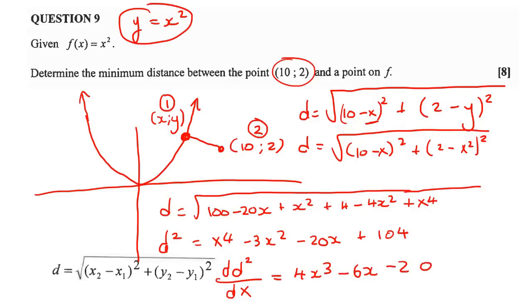All right. And now we know that if you want to find the minimum, you have to make that equal to zero. So you have to make your first derivative equal to zero. So we're going to say, zero is equal to four. Actually, let me write this somewhere else. I'm going to take it up here now. So we're going to say zero is equal to 4x cubed minus 6x minus 20.